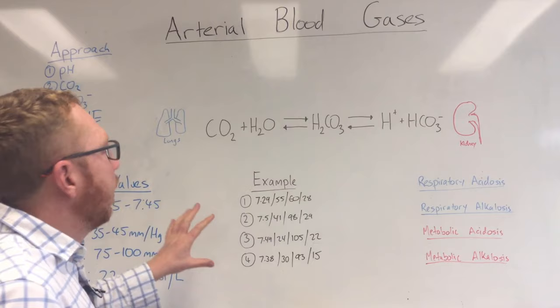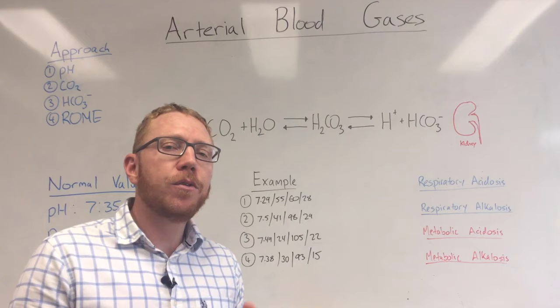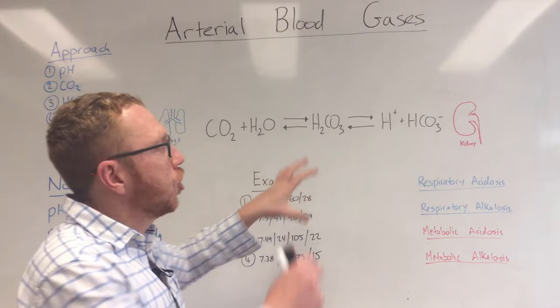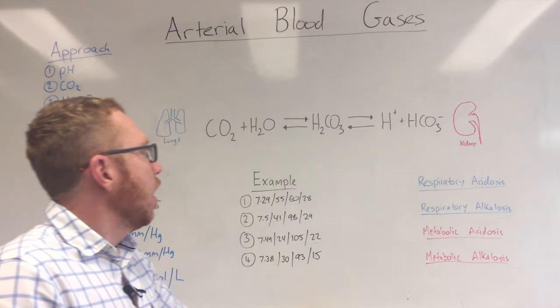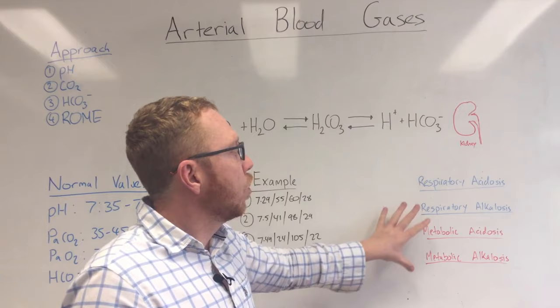There are a few things on the board. Firstly, we have the bicarbonate buffering system equation. If you're not familiar with this, I suggest you go and look at Mike's video on this topic. We'll also look at some states you could be in: respiratory acidosis, alkalosis, metabolic acidosis, and alkalosis — what would cause these states to occur and how they impact this equation.